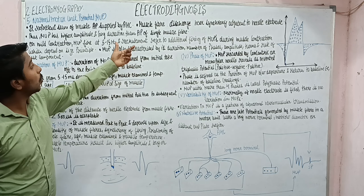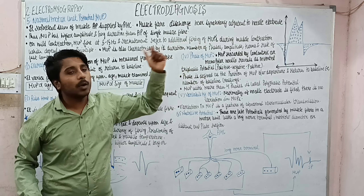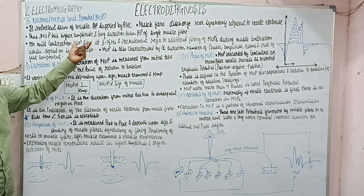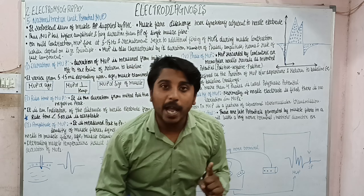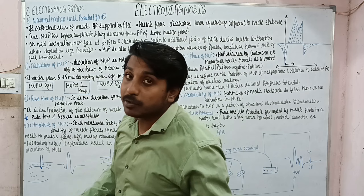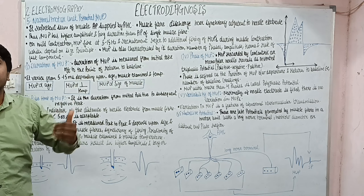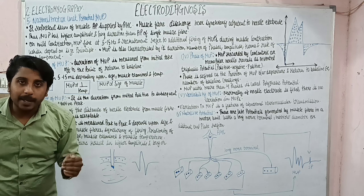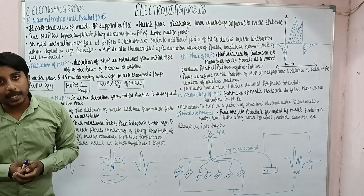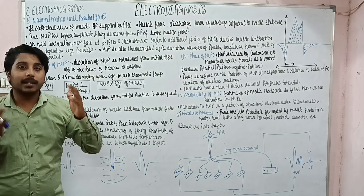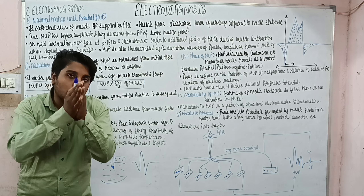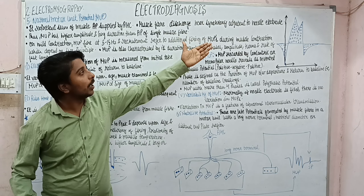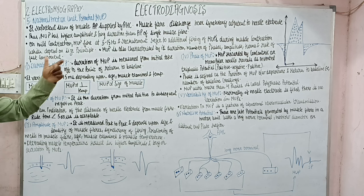The motor unit potential has higher amplitude and longer duration. All the muscle fibers discharge at nearly the same time, adjacent to the needle electrode. This property by which they discharge in a collective manner and together is called synchrony — muscle fibers discharge in near synchrony adjacent to the needle electrode.